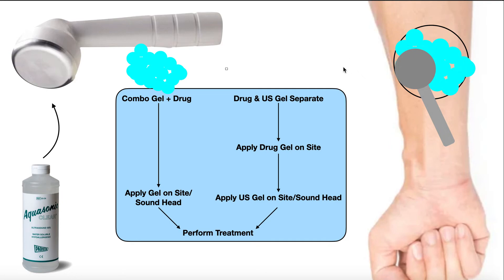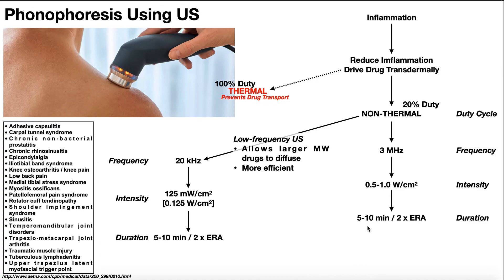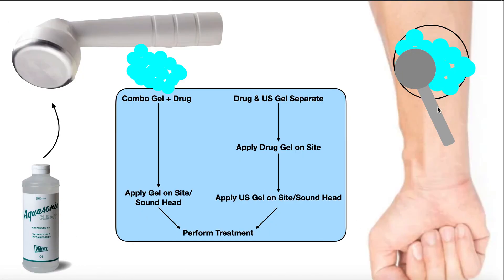Over the course of 5 to 10 minutes, this will drive the drug transdermally through the skin. One last important thing: you cannot use this technique to deliver a drug to a very deep tissue. This is only going to penetrate tissues to a maximum of about five centimeters depth beneath the skin. So if you're trying to reach the large intestine, it won't work. But for tissues like the rotator cuff muscles or the flexor tendons in the forearm — which are certainly within five centimeters — phonophoresis would be effective and valid for drug delivery.